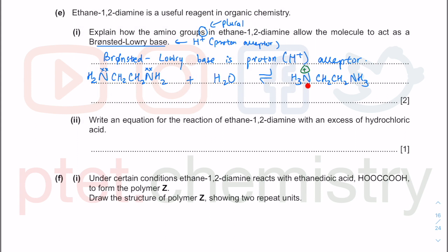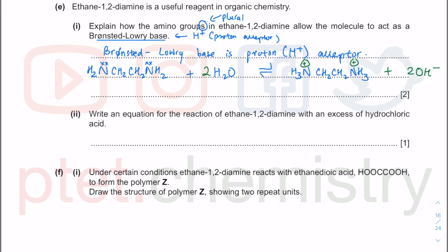When each nitrogen accepts a proton, it gains a fourth covalent bond and acquires a positive charge, giving [H₃N-CH₂-CH₂-NH₃]²⁺. Two water molecules are needed — one for each NH₂ group — releasing two OH⁻ ions. This shows en dissociates in water to give OH⁻, confirming it is a base; as a Brønsted-Lowry base, it accepts protons from water. A balanced equation demonstrating partial dissociation is used to show this.